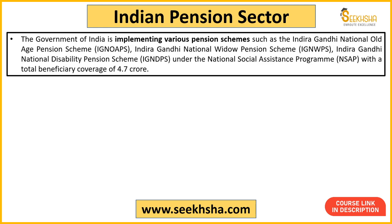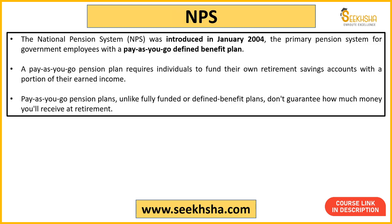If we talk about pension schemes, the government is running many pension schemes including the Indira Gandhi National Old Age Pension Scheme, Indira Gandhi National Widow Pension Scheme, Indira Gandhi National Disability Pension Scheme, and the National Social Assistance Program. Around 4.7 crore people are covered under these various schemes.